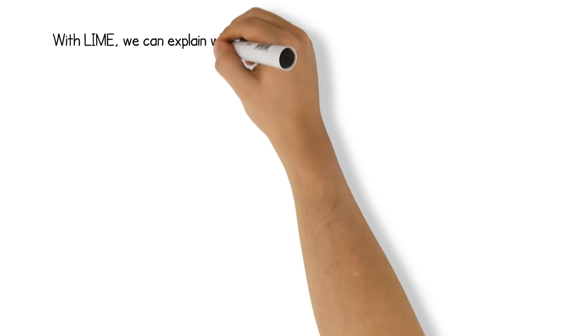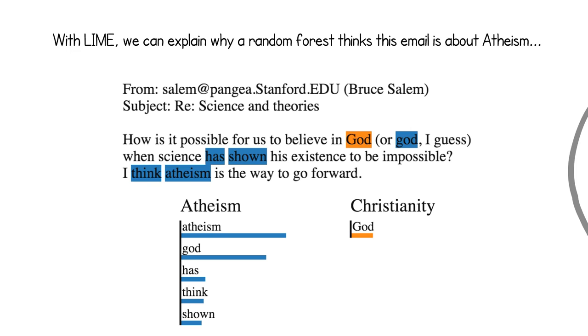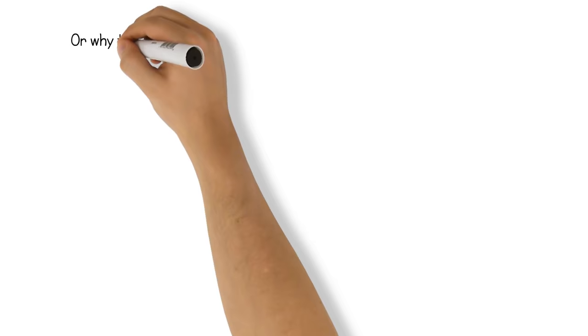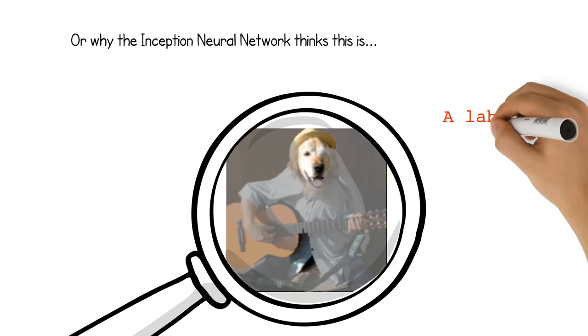With LIME, we can explain why a random forest thinks this email is about atheism. It picks up on words such as atheism, or God with lowercase g. It also thinks that God with uppercase g is evidence for Christianity. Or why Google's Inception neural network thinks this image is a guitar? Or a Labrador?